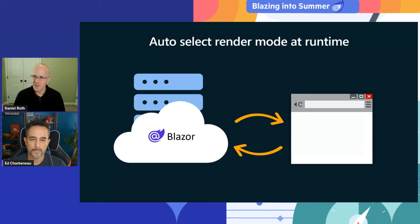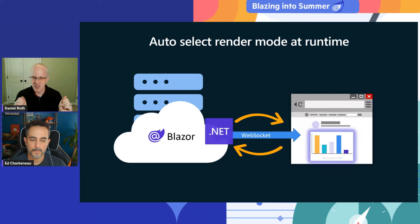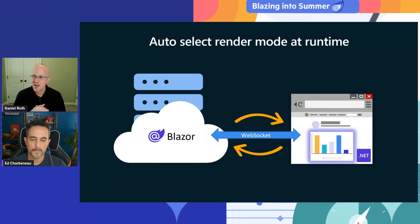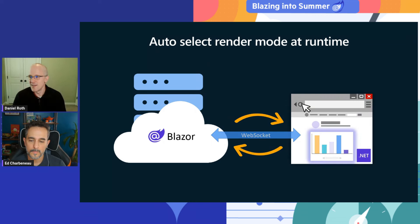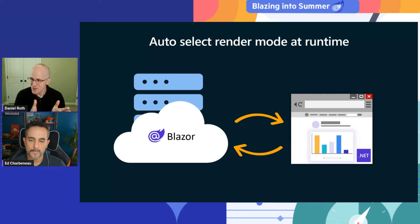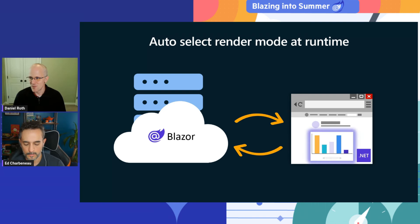The auto-render mode lets you start a user off with interactive server rendering where you set up the WebSocket connection — that loads quickly — while in the background downloading and caching the .NET WebAssembly runtime. On future visits when the user navigates to that page again, Blazor detects it already has the runtime and uses WebAssembly, offloading that work from the server.